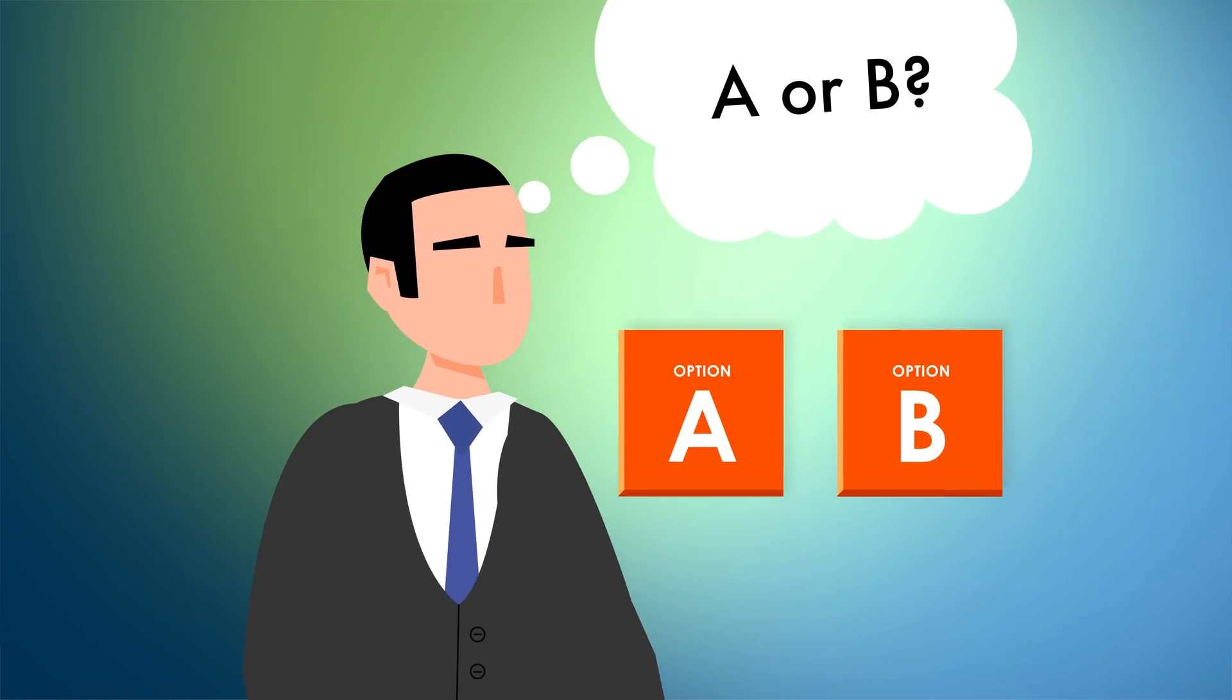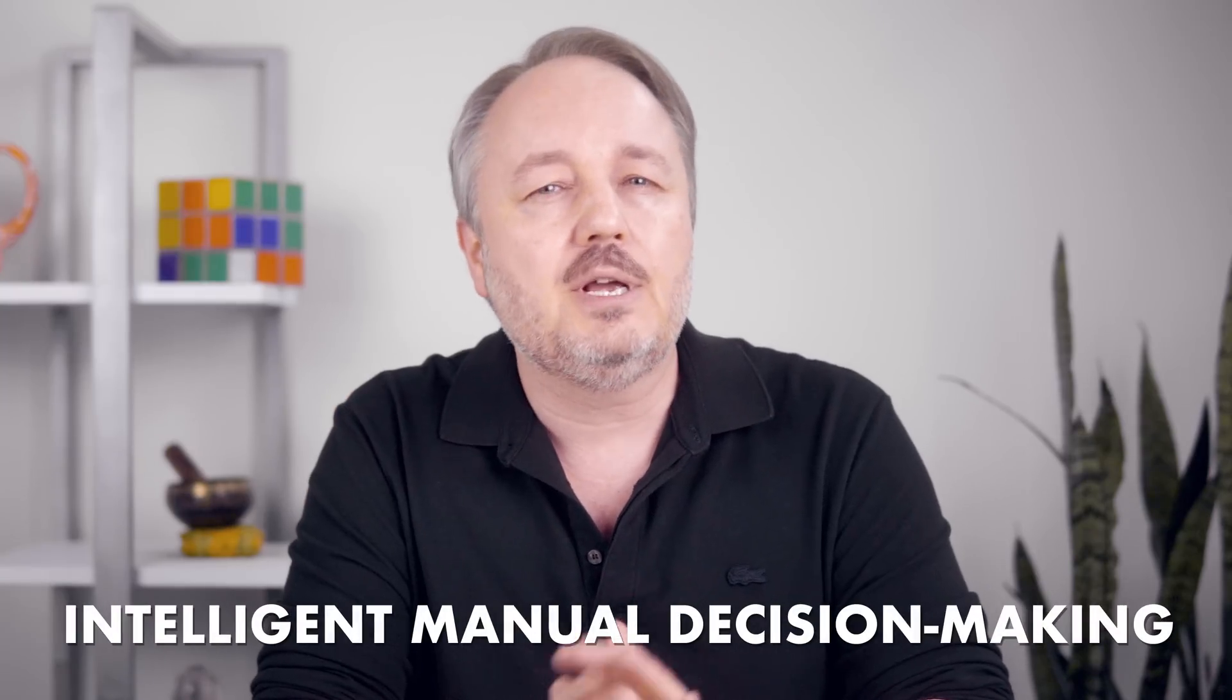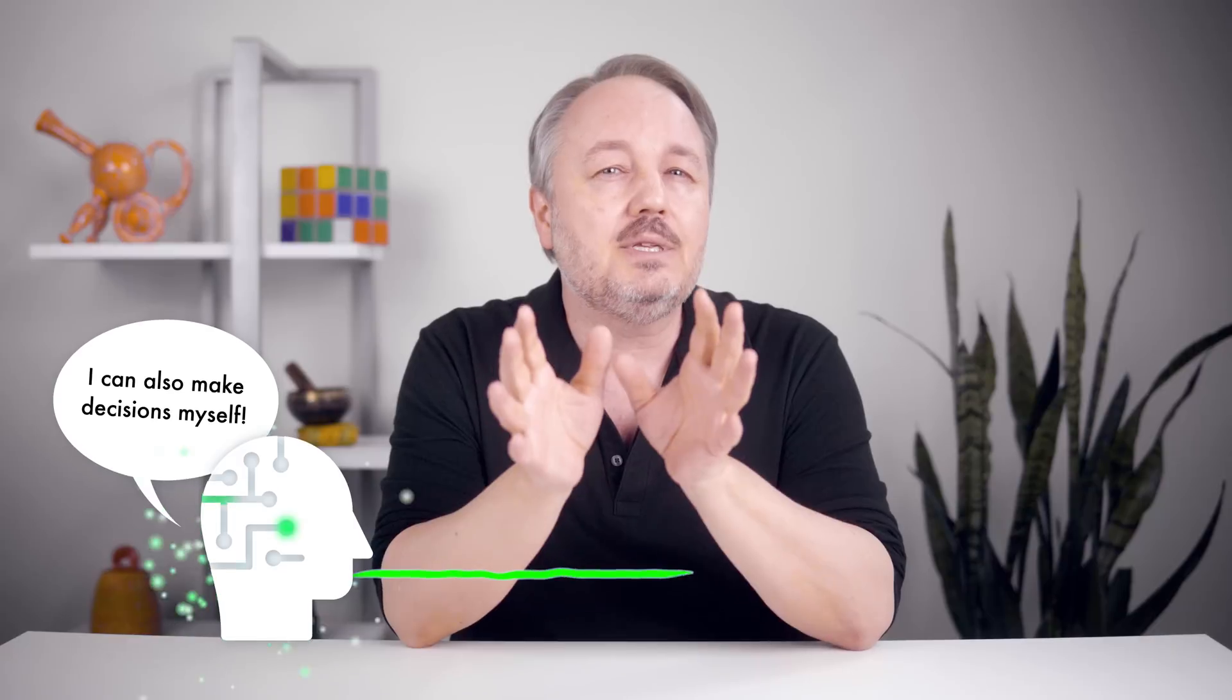We, as human decision makers, can look at data intelligence reports and make good business decisions. This is called intelligent manual decision-making. But we can also bring in an AI system to do some of the decision-making for us. This may or may not be a good idea, depending on a number of factors that we'll discuss in this video.